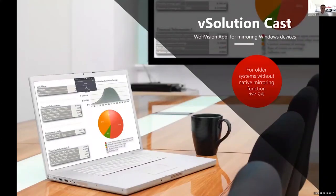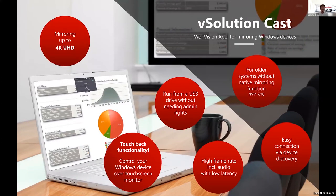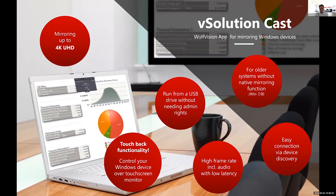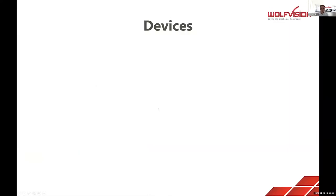Lastly, we have vSolution Cast — our dedicated application which can be installed on Windows 7 or higher. From Windows we support up to 4K mirroring, and it can be run from a USB drive without any admin rights. We also offer touchback functionality, as we do with Miracast, which is really useful if you're using a touch-screen large-format display connected through to your laptop.